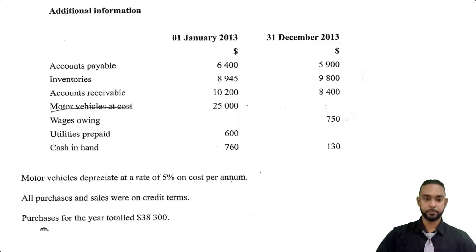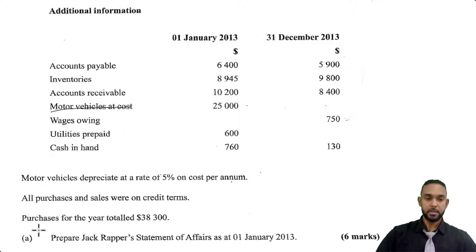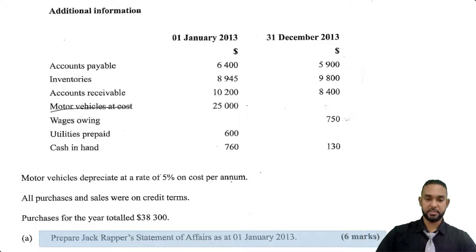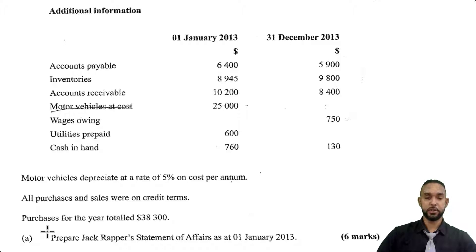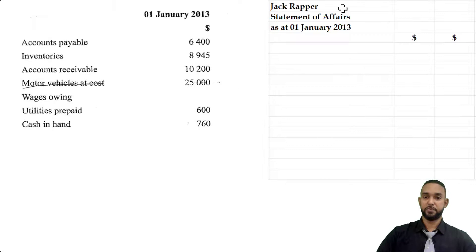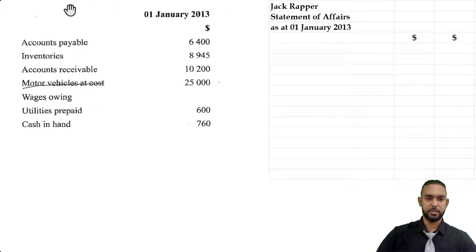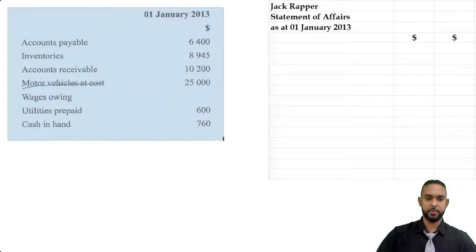The first thing they are asking us for is a statement of affairs as at 1st January 2013. A statement of affairs is simply a very simplified balance sheet — a calculation of capital: assets minus liabilities. We are going to go up to the additional information and pull the column for 1st January 2013. Please don't forget to head up your statement.